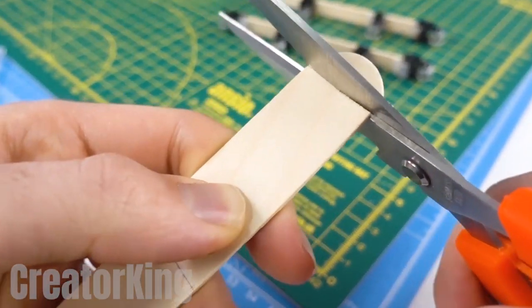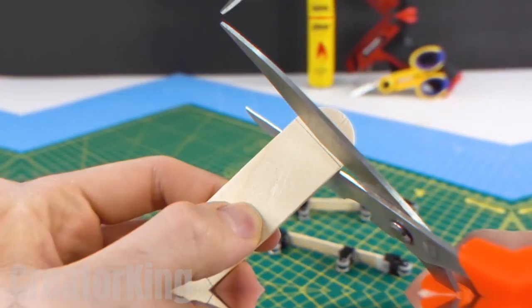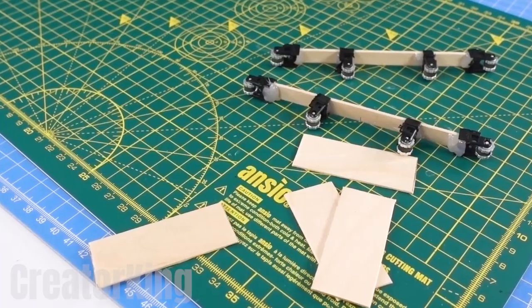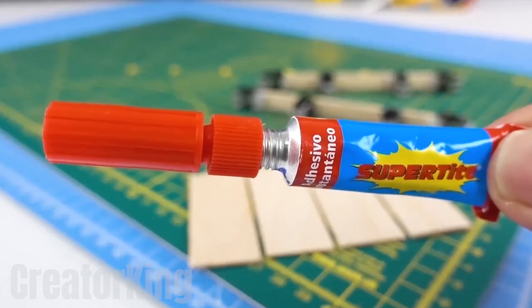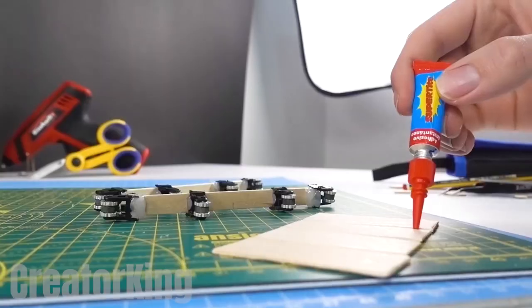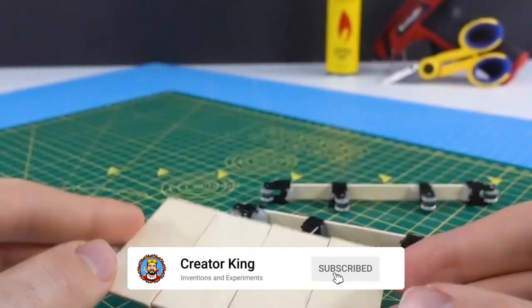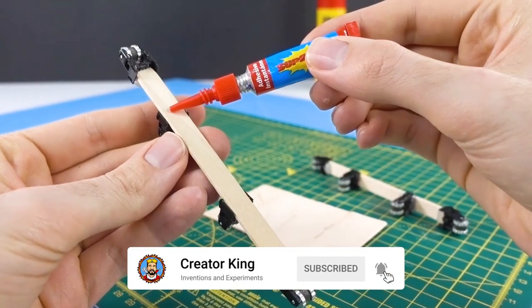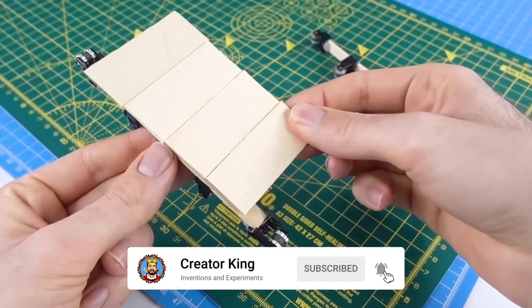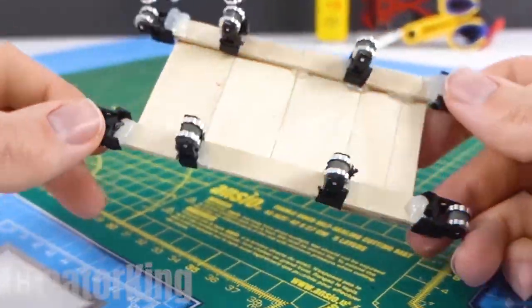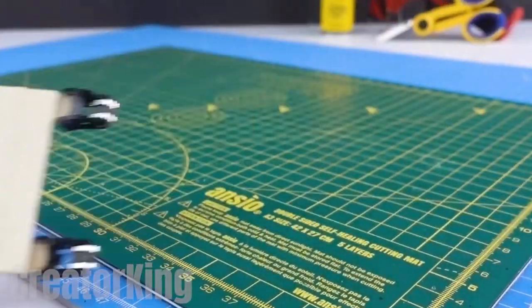After this little information session, we'll need a popsicle stick wider than the previous ones, on which we'll make marks every six centimeters, and then cut it. You may need two to get the four pieces we'll need. Once you're all set, use some super glue and make a big wooden base. Also apply glue to our Caterpillar Tractor pieces and attach them to the base we just created. It's looking more and more like the final product.